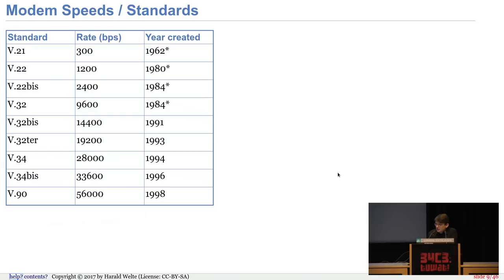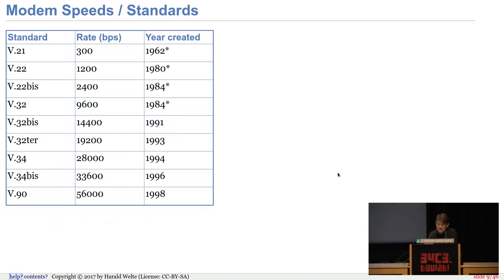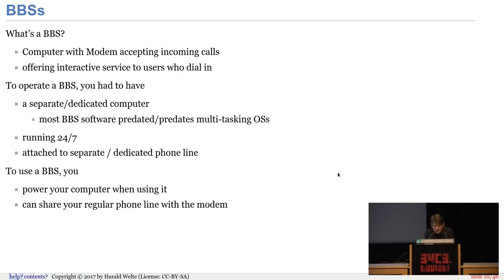Speeds progressed, and different modulation schemes were introduced to squeeze ever more bits into these 3 kilohertz analog circuits over the telephone line. In the 90s: 14,400 BPS in 1991, 19.2 in 1993, 28,000 bits per second in 1994. There were also proprietary protocols where you had to have the same manufacturer of modem as the other side. These are the official standardized protocols and speeds that were used.